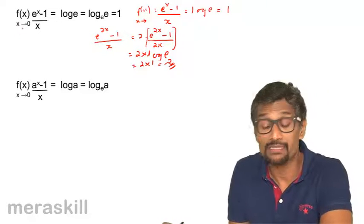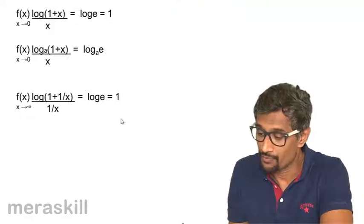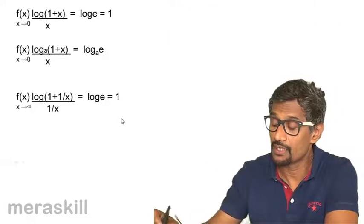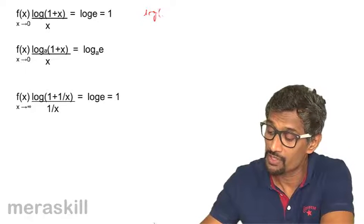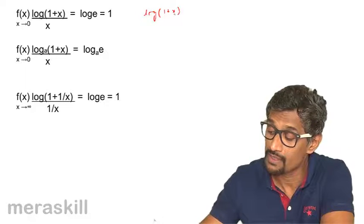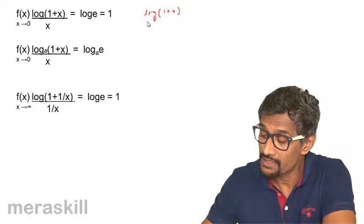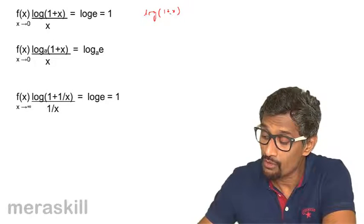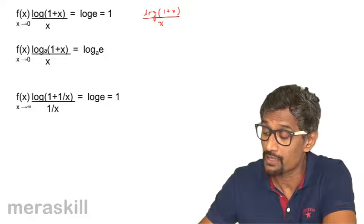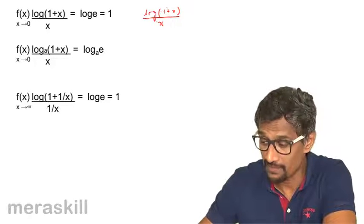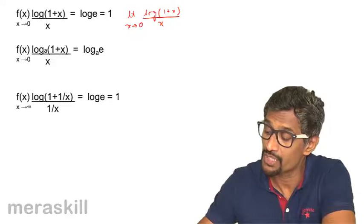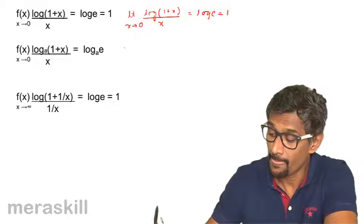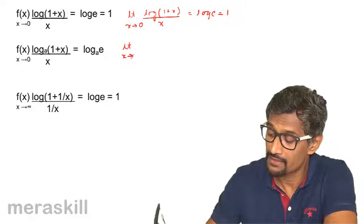Then there is one very important logarithmic formula: lim as x → 0 of log(1 + x) / x. Candidates must take care that the x in the denominator is not part of the logarithmic function. This limit equals log e, which is 1.